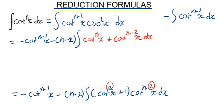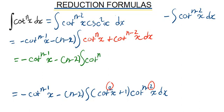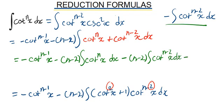We write that as separate integrals. We are going to have minus cotangent^(n-1)(x) minus (n-2) times the integral of cotangent^n(x) dx, minus (n-2) times the integral of cotangent^(n-2)(x) dx. Then I bring back the held part: minus the integral of cotangent^(n-2)(x) dx.